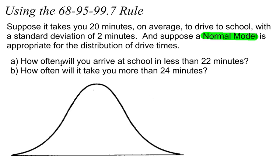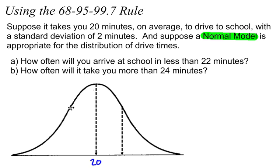How often will you arrive at school in less than 22 minutes? Let's take what we know about bell-shaped curves. This normal model is bell-shaped, which tells me that the mean is in the middle. The mean is 20 minutes, so in the center I've got a mean of 20. One standard deviation above is the point of inflection. Since the standard deviation is 2, one standard deviation above the mean is 22, and one standard deviation below the mean is 18.